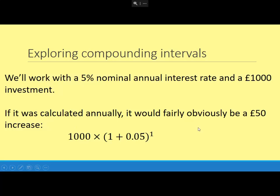Let's have a look at some examples. We think about a 5% nominal annual interest rate on a £1,000 investment. If you just calculated that annually, you would find 5% of £1,000, or you can use the compound interest formula, but it's £50 anyway.